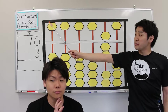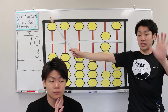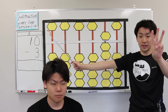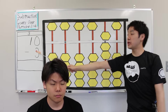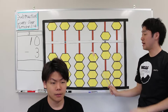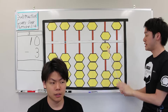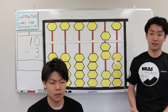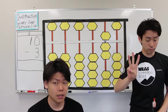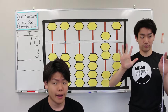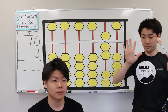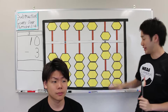This is subtraction carryover pattern 3. 2, subtract 3, subtract 10, and add 7. 2, subtract 3, subtract 10, and add 7. Try again.